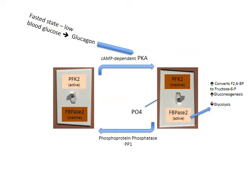In a fasted state with low blood glucose, the liver needs to put glucose back into the blood by increasing gluconeogenesis. Alpha cells of the pancreas release glucagon, which travels to the liver and through a cascading signaling mechanism increases cyclic AMP levels, activating PKA. PKA adds a PO4 to the bifunctional enzyme, putting it in the FBPase-2 active state, converting fructose-2,6-bisphosphate to fructose-6-phosphate and increasing gluconeogenesis.